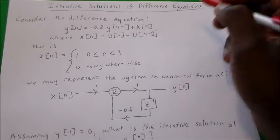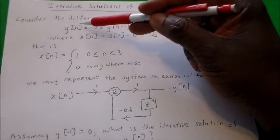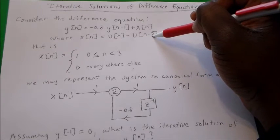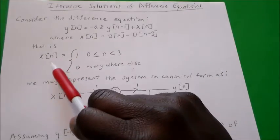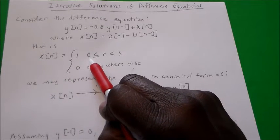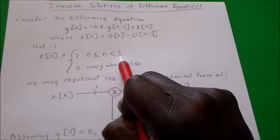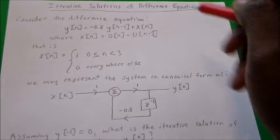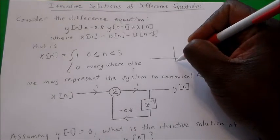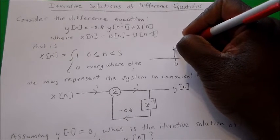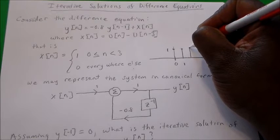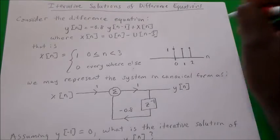For this difference equation, we will be inputting a signal x(n), which is equal to the unit step minus the unit step delayed by three samples. That signal is equal to 1 between n=0 and up to just before n=3 — everywhere else it's equal to 0. So at time 0, 1, and 2 we have a value of 1; everywhere else it equals 0.